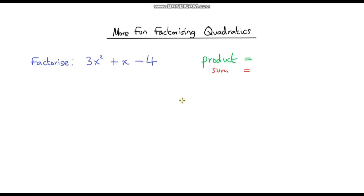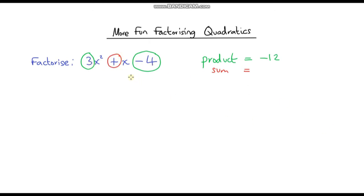Let's get some more practice with factorizing quadratics. We're going to factorize 3x squared plus x minus 4. When factorizing quadratics where the coefficient on the x squared term is greater than 1, we need to find two numbers that have a product of negative 12 — that's 3 times negative 4 — and a sum of 1, since plus x means plus 1x.